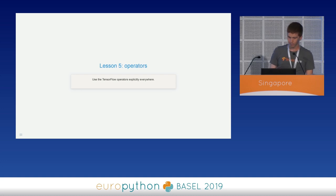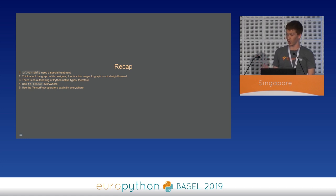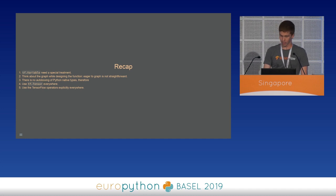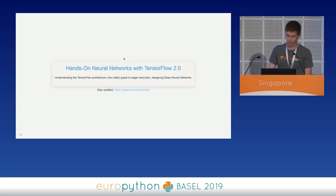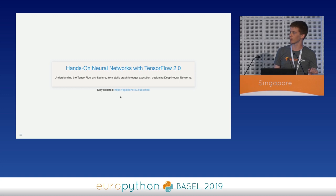We are reaching the end, and here is a recap of the five points. First, tf.Variable needs special treatment — you have to think about the graph while designing the function. Second, the conversion from eager to graph is not straightforward. Third, there is no autoboxing of Python native types to tf.tensor, so use tf.tensor everywhere. And fourth, we have to use TensorFlow operators explicitly everywhere. I hope you enjoyed the talk. I'm also writing a book about TensorFlow, TF function, and neural networks — leave your email on the subscribe page to be informed when it's out.